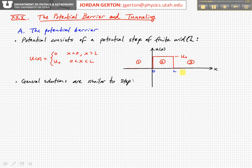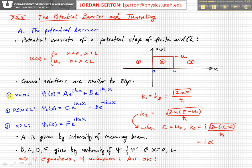The general solutions to this problem are similar to what we saw for the step potential. In particular, in region 1 we have oscillatory solutions. Psi₁ is equal to some amplitude coefficient A times e to the i·k₁·x, plus another amplitude coefficient B times e to the minus i·k₁·x. And k₁, which equals k₃, is the oscillatory solution in region 3, equal to the square root of 2mE divided by ℏ. Here m is the mass of the particle.